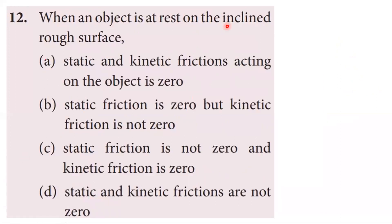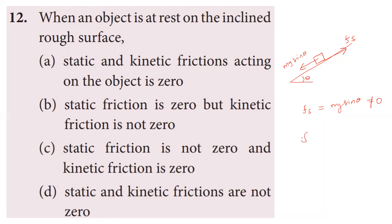Question 12: when an object is at rest on a rough inclined surface. The object is stationary, so static friction acts, not kinetic friction. Static friction is not zero — it equals Mg·sin θ to keep the object at rest. Since there is no motion, kinetic friction is zero. Static friction is not zero and kinetic friction is zero. Option C is correct.